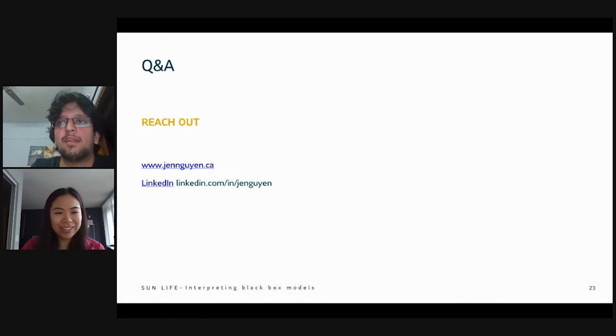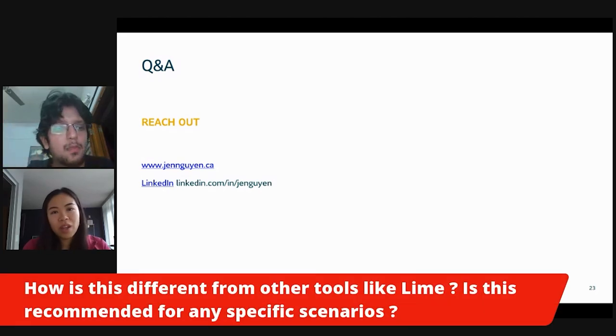Fair enough. I think we'll look them up and we'll get back to this. So Shashidar asks, how is this different from other tools like LIME? Is this recommended for any specific scenarios? Yes. So as I mentioned, SHAP is the only one that meets all three properties of missing in action, locally accurate, and consistency. So Lime is short of, he doesn't meet all three. So you get the benefit with SHAP, the consistency part. The con with SHAP, as I mentioned, is that it is more computationally intensive.